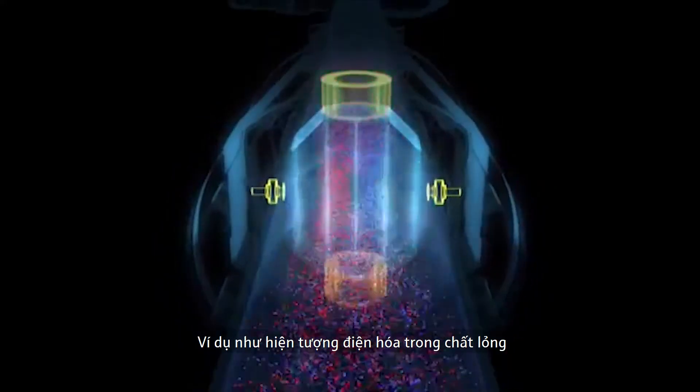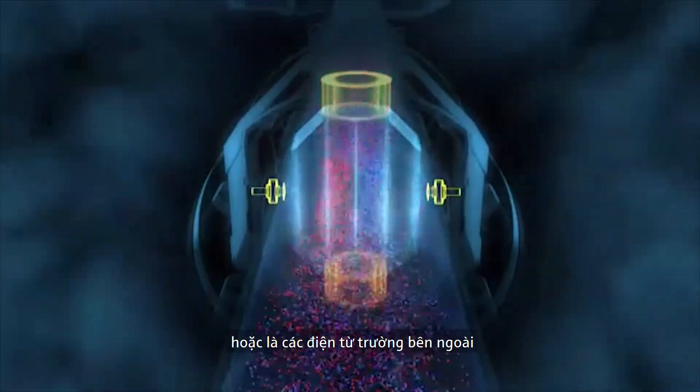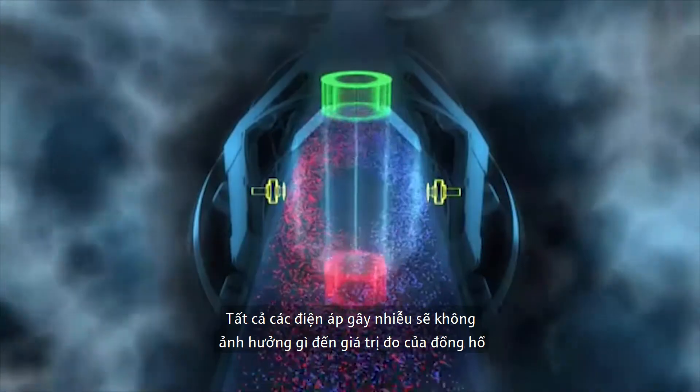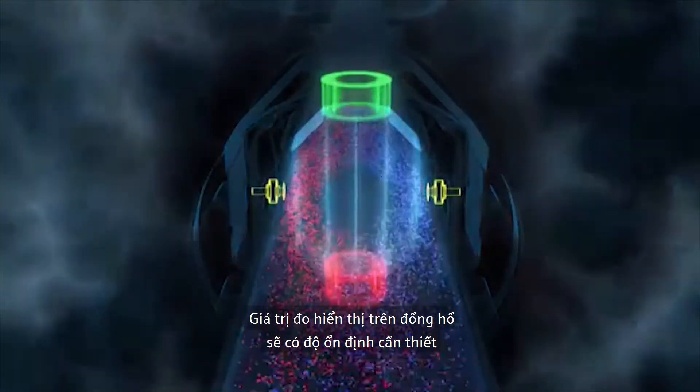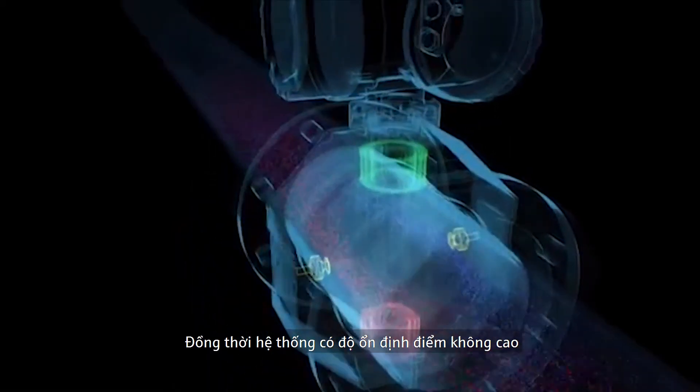For example, electrochemical effects in the liquid or external electromagnetic fields. Thus, the size of such interference voltages has no impact whatsoever on the actual measuring signal. The advantages of this are a stable measurement and a stable system zero point.